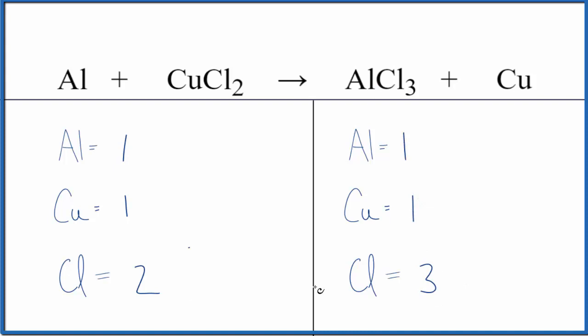Whenever we have an odd number when balancing equations, it's usually good to make it even. If I put a 2 in front of the aluminum chloride, I'll have 1 times 2, so two aluminum atoms. And 3 times 2 gives me 6 chlorine atoms. That's an even number.